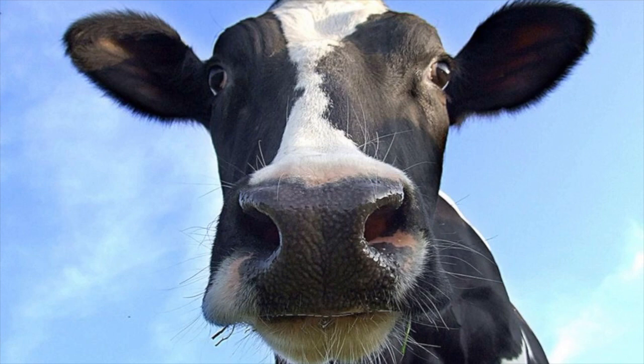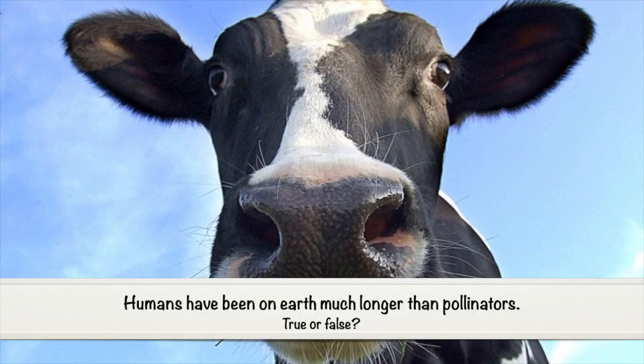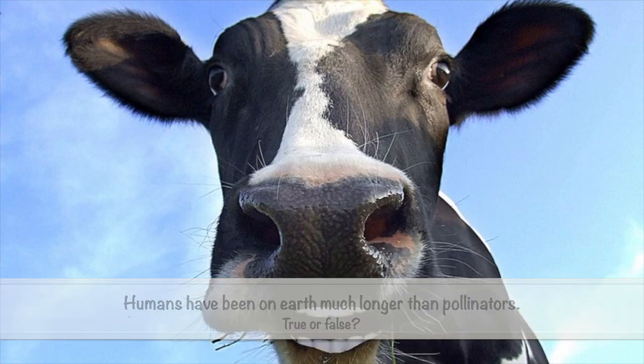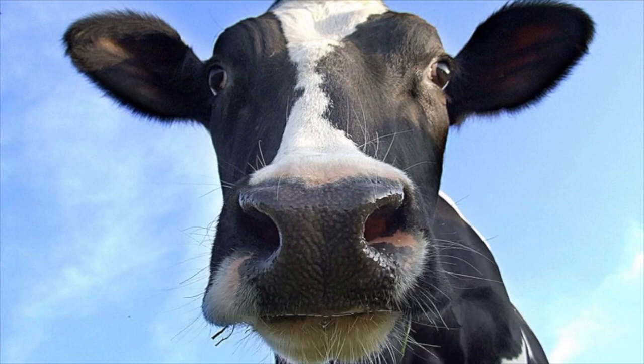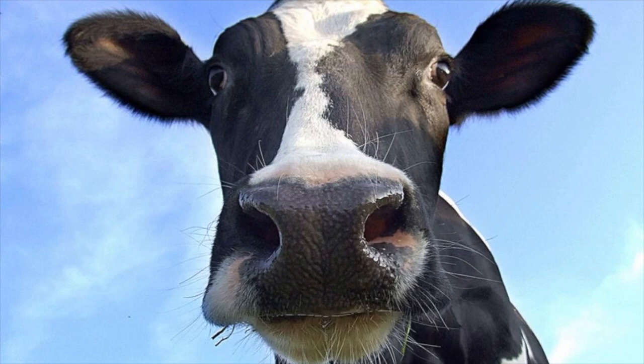More quiz! Humans have been on Earth much longer than pollinators. True or false? No way, Jose! Pollinators have been around for over a hundred million years. Humans haven't even been around for half a million yet.